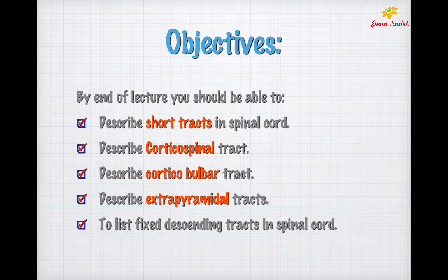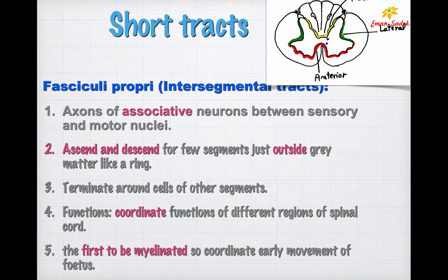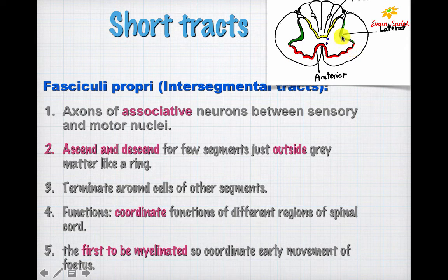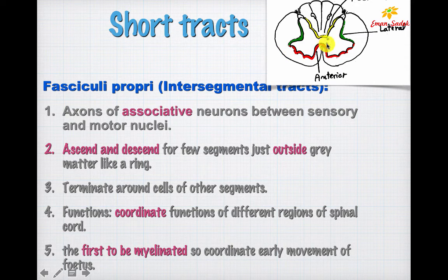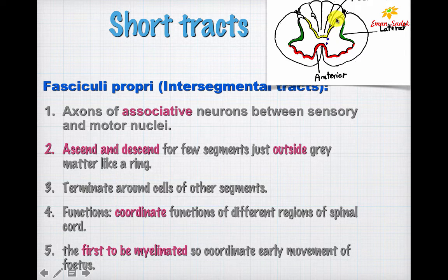Starting with the short tracts, we have four short tracts. The first one is present around the gray matter of the spinal cord at all levels and is called fasciculi propri, meaning a proper fascicle or intersegmental tract, because it connects different segments with each other. It is formed by axons coming from associative nuclei present between the posterior sensory and anterior motor regions. These nuclei send axons that pass through the white matter surrounding the gray matter, forming a ring with posterior, lateral, and ventral parts.